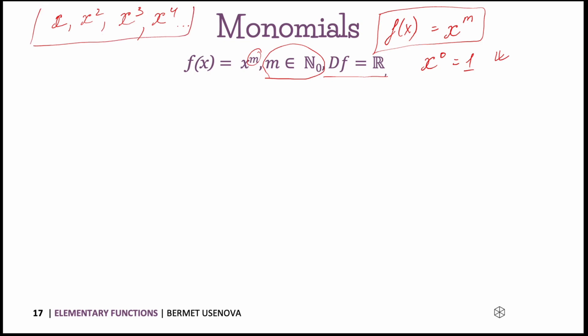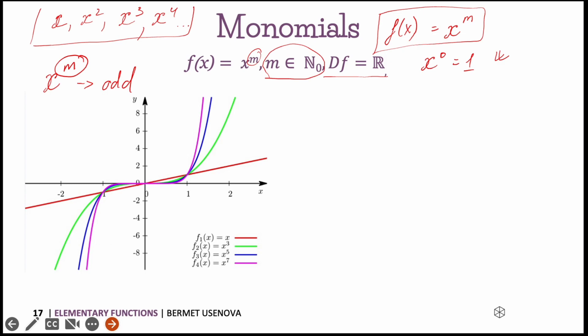Looking at the graphical representations, we can differentiate monomials into odd and even functions, just by looking at the exponent m in x to the power of m. If m is an odd number, the graph will look like this — here we have examples: x is just a line, and these are x to the power of 3, x to the power of 5, and x to the power of 7. They are all symmetric with respect to the origin, and since they are odd functions, f(−x) = −f(x).